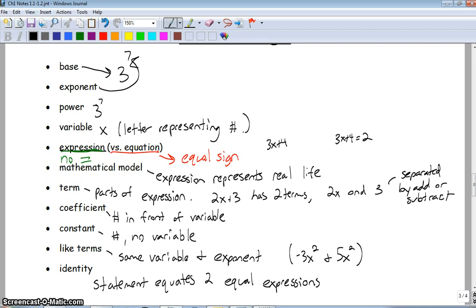Coefficient is a number in front of the variable. So again, if you look right above there, the coefficient for this term would be 2. It's the number in front of the variable. A constant would be a number. There's no variable with it. So again, if we look at this 2x plus 3 that I have up here, the constant is 3.